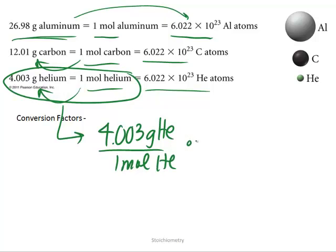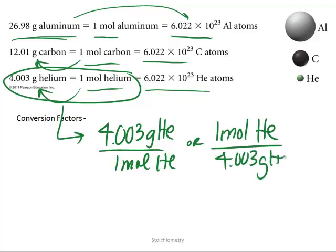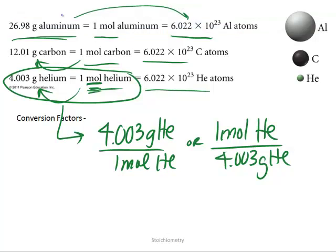You can write 4.003 grams of helium per one mole of helium, or you can say that in one mole of helium there are 4.003 grams of helium. I should note that for a slight abbreviation, instead of mole M-O-L-E, you can abbreviate it M-O-L. So those are the two conversion factors for grams to moles or moles to grams.